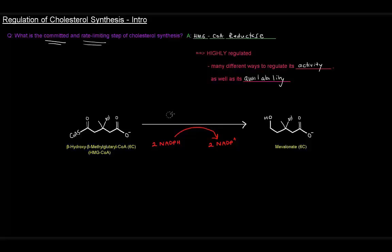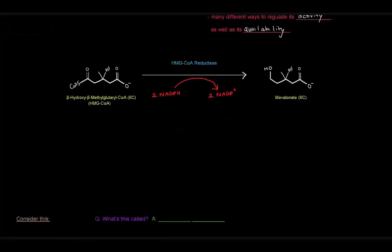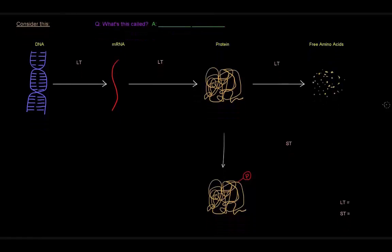So here is the step catalyzed by HMG-CoA reductase, taking HMG-CoA and reducing it to mevalonate, which is the molecule that was committed to cholesterol synthesis. So I want you to consider this here. In the DNA, we would have the gene for the HMG-CoA reductase enzyme, because it's a protein. So we would have a gene for it.